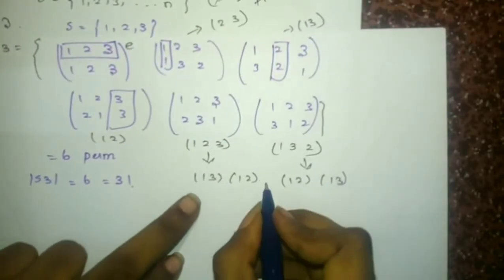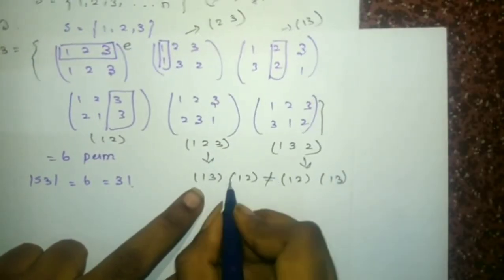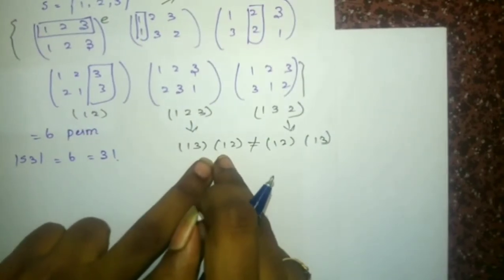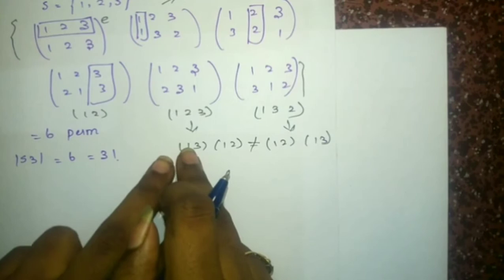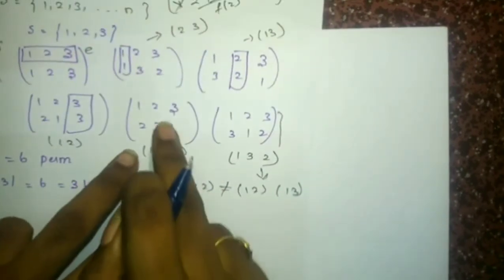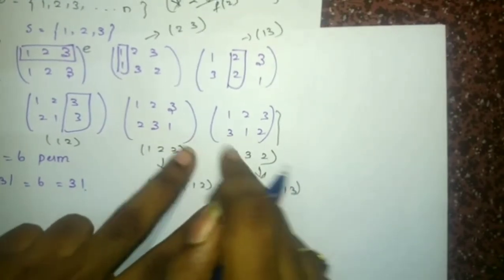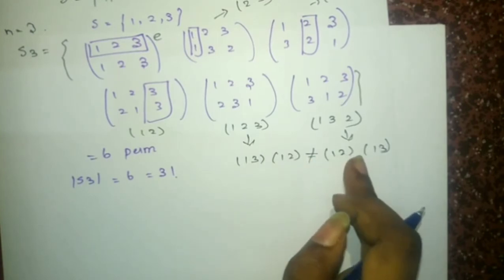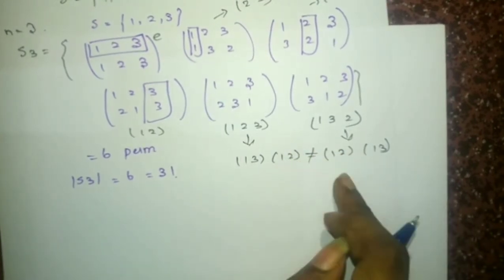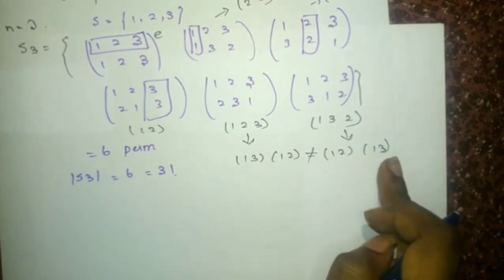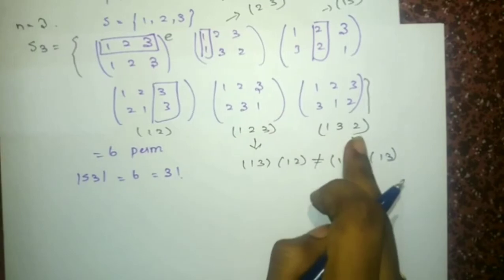These two are not the same, because if you switch the transposition — I mean move (1, 2) to here — it will give (1, 2)(1, 3). But these two permutations are not the same. Please be careful here, because many people go wrong. They think (1, 3)(1, 2) is the same as (1, 2)(1, 3), but they give different permutations. Please be aware of it.